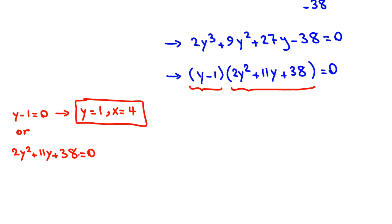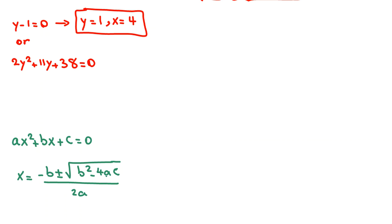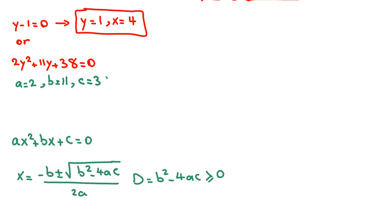For the second case, 2y squared plus 11y plus 38 equals 0, we use the quadratic formula. When ax squared plus bx plus c equals 0, x equals negative b plus or minus square root of b squared minus 4ac, all over 2a. The discriminant is b squared minus 4ac, and it must be at least 0 for real solutions. Here a equals 2, b equals 11, and the constant term equals 38.